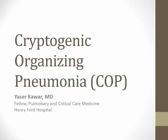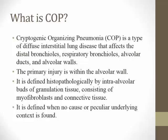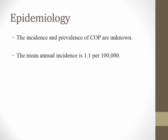Today we will be talking about cryptogenic organizing pneumonia. It is a type of diffuse interstitial lung disease that affects the distal bronchioles, respiratory bronchioles, alveolar ducts, and the walls of the alveoli. The primary injury starts within the alveolar wall. On histopathology we see intra-alveolar parts of granulation tissue with myofibroblasts and connective tissue. It is called cryptogenic when no cause or underlying context is identified.